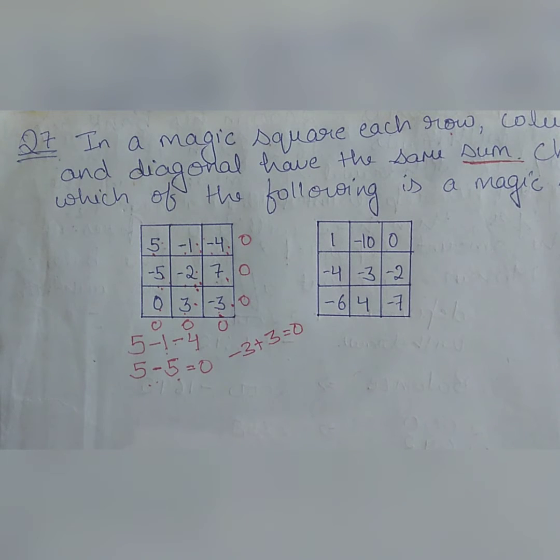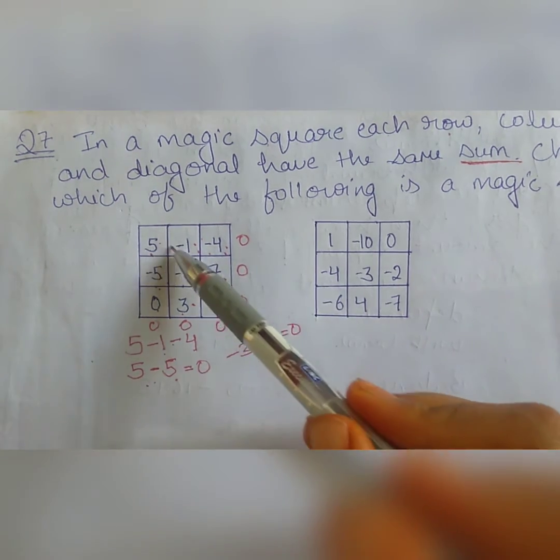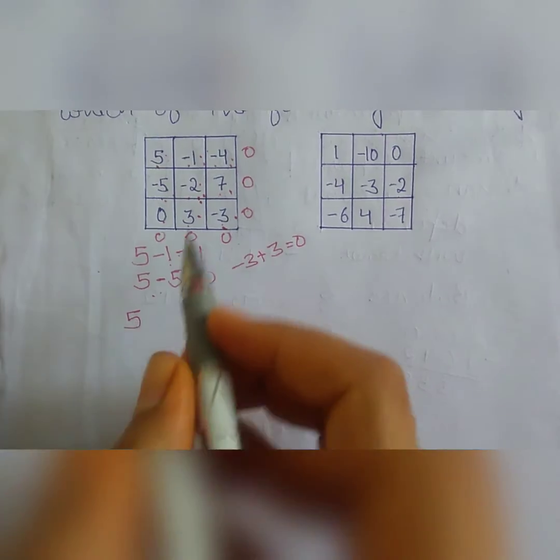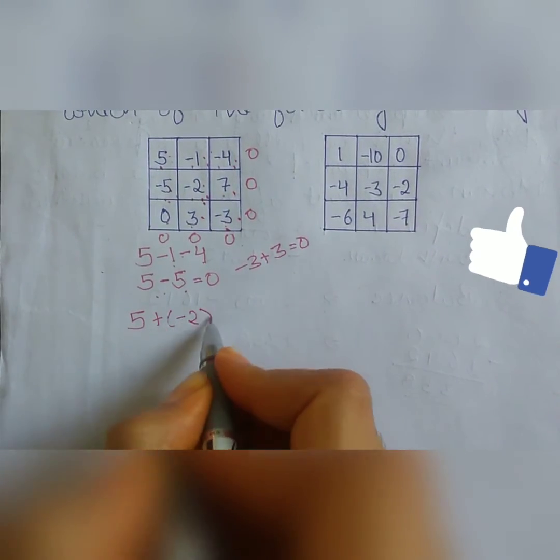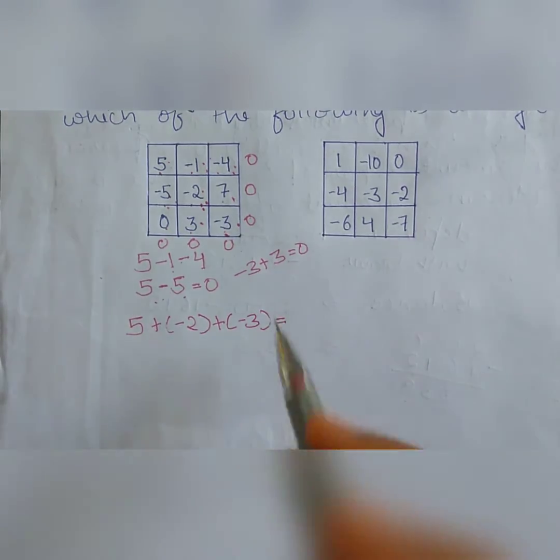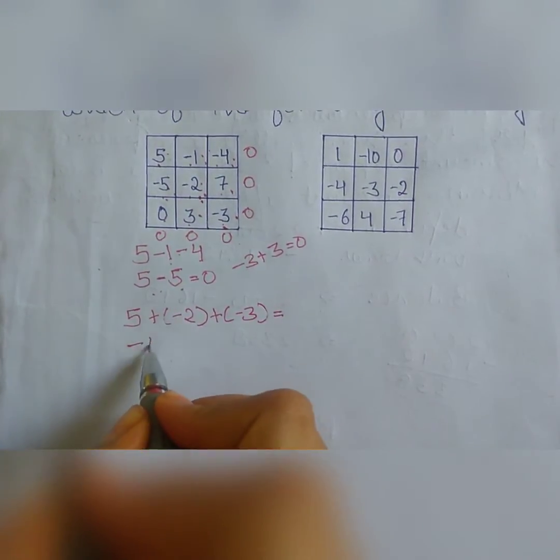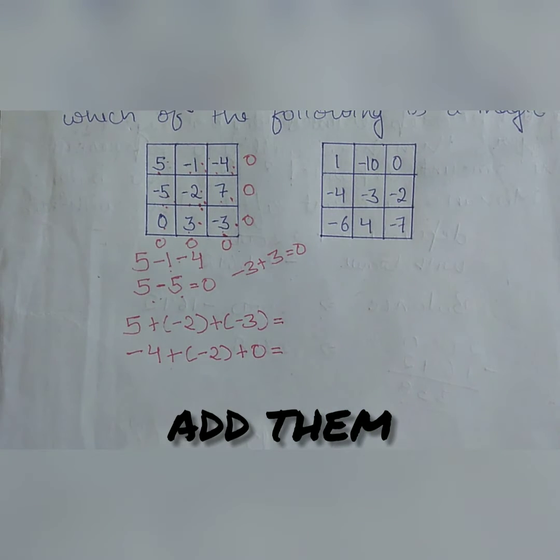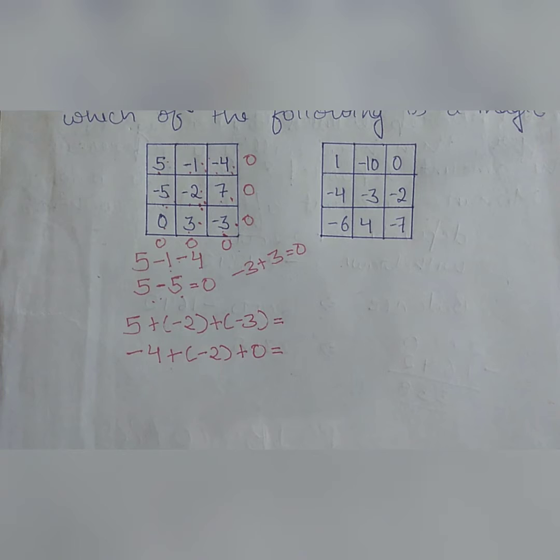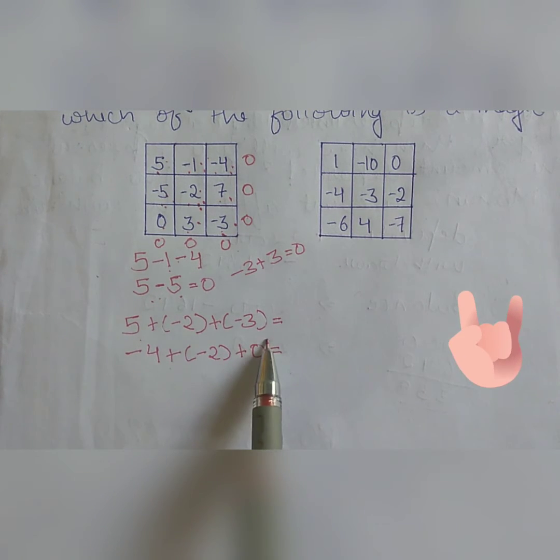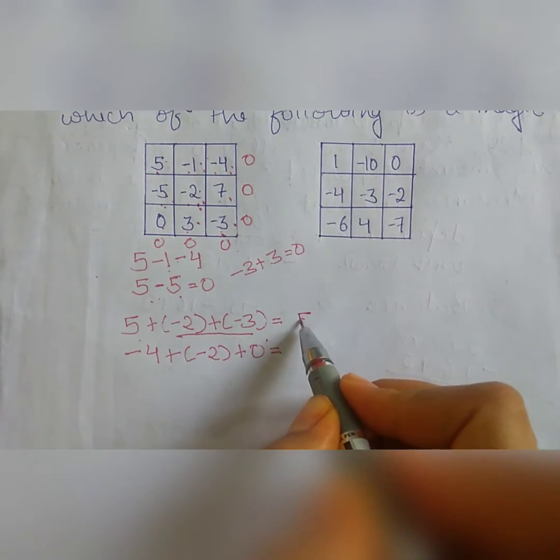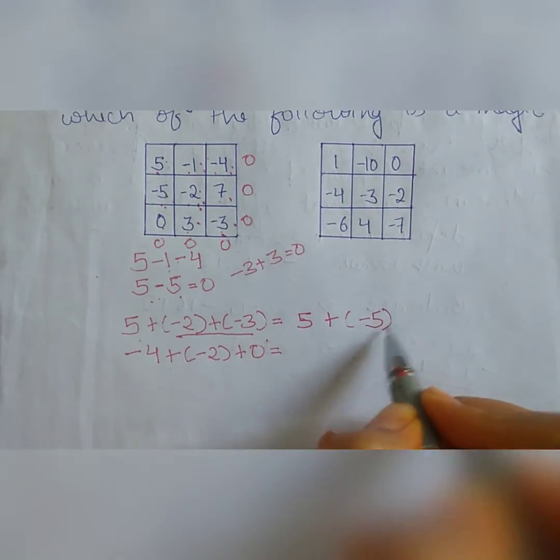So here we have seen that the sum of the rows and columns is same. Now we will check the sum of the diagonals. In diagonal let us write what values we are having. So in diagonal we are having 5 plus minus 2 plus minus 3, and in another diagonal we are having minus 4 plus minus 2 plus 0. Now we will check whether the sum comes 0 or not. Here 5 plus minus 2 plus minus 3, first we will take both the values that are having minus. So 5 plus minus 5, this is coming 0.